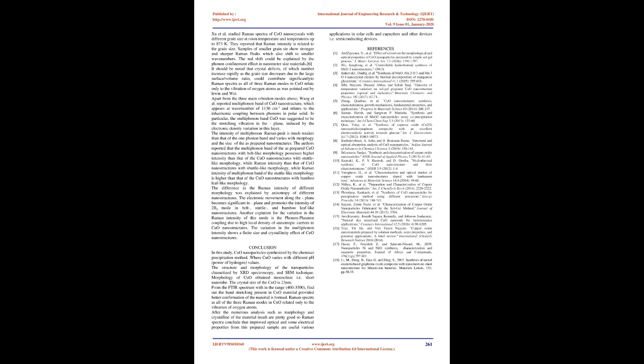Conclusion: In this study, CuO nanoparticles were synthesized by the chemical precipitation method, where CuO was varied with different pH (power of hydrogen) values. The structure and morphology of the nanoparticles were characterized by XRD spectroscopy and SEM technique. Morphology of CuO obtained was monoclinic, i.e., short nanotube. The crystal size of CuO is 2–3 nm. From the FTIR spectrum within the range 400–3500 cm⁻¹, the band stretching present in CuO material provided better confirmation that the material was formed. Raman spectra show that all three Raman modes in CuO relate only to the vibration of oxygen atoms. The analysis of morphology and crystallinity yielded good results, and the improved optical and electrical properties from this prepared sample are useful for various applications in solar cells, capacitors, and semiconducting devices.